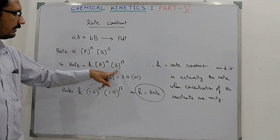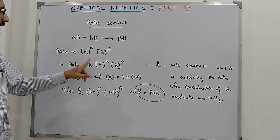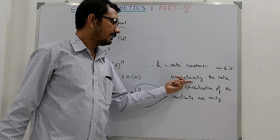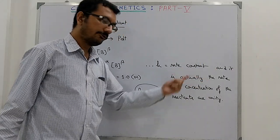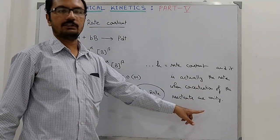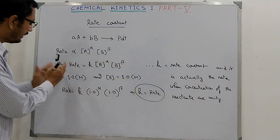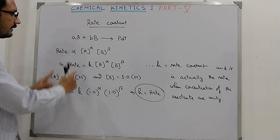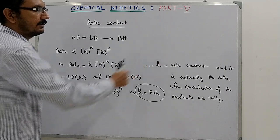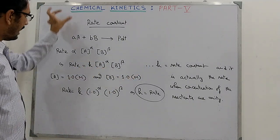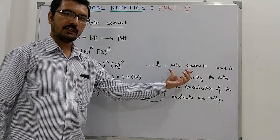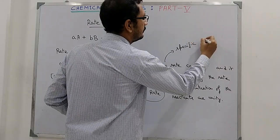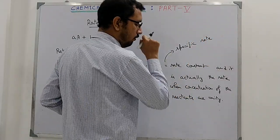The rate corresponding to unit concentrations of the reactants is the rate constant. So K is the rate constant and it is actually the rate when the concentration of the reactants are unity. K is nothing new — it is also a rate. Since concentrations may be different, rates may be different, but among all such rates there is one specific rate that is the rate constant. For this reason, another name for K is the specific rate constant, since it refers to a particular concentration of reactants.